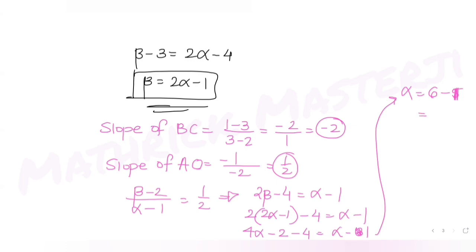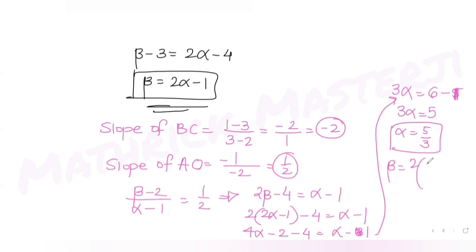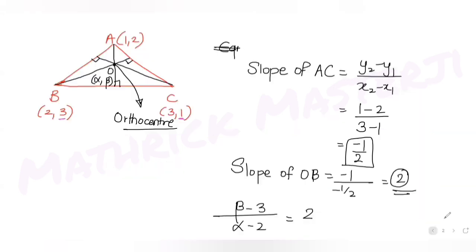So alpha = 5/3. Substituting back, beta = 2×(5/3) - 1 = 10/3 - 1 = 7/3. Therefore the orthocenter is at (5/3, 7/3).